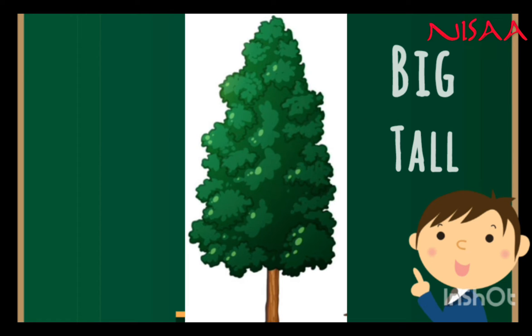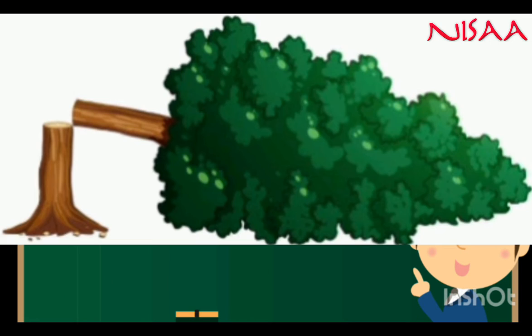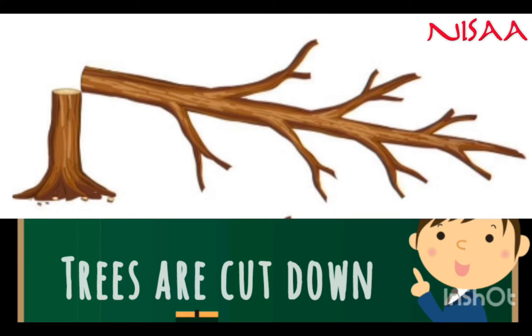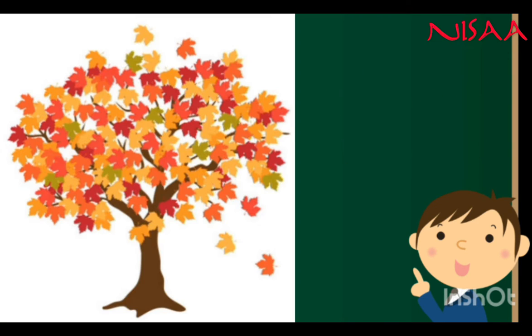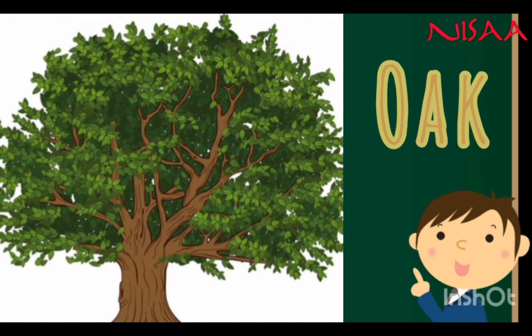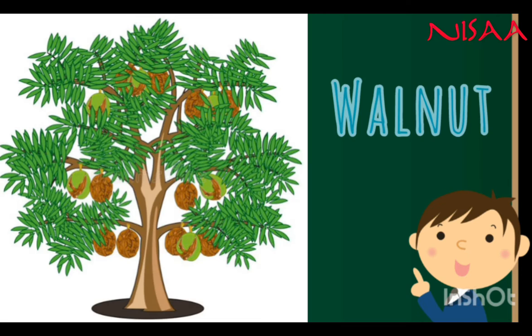When trees grow big and tall, their trunk, branches and twigs form the wooden part. Then the trees are cut down and the wood is collected. Trees like mango, maple, oak, pine, walnut, etc. give us lots of wood.